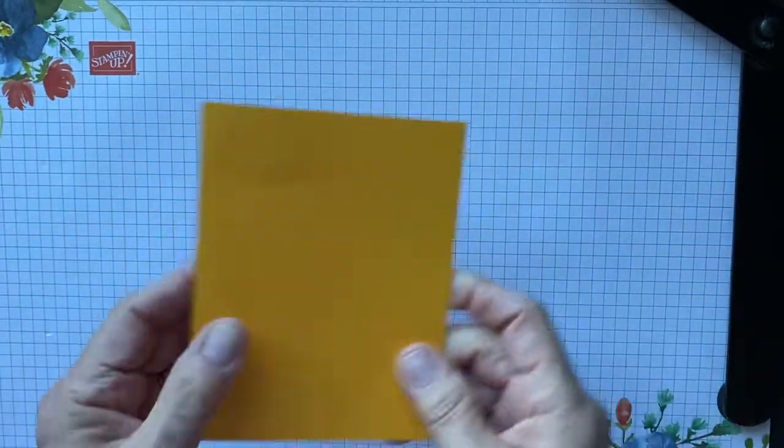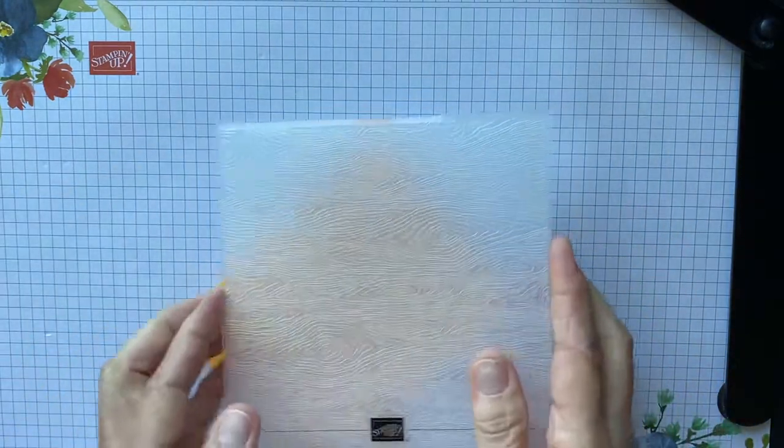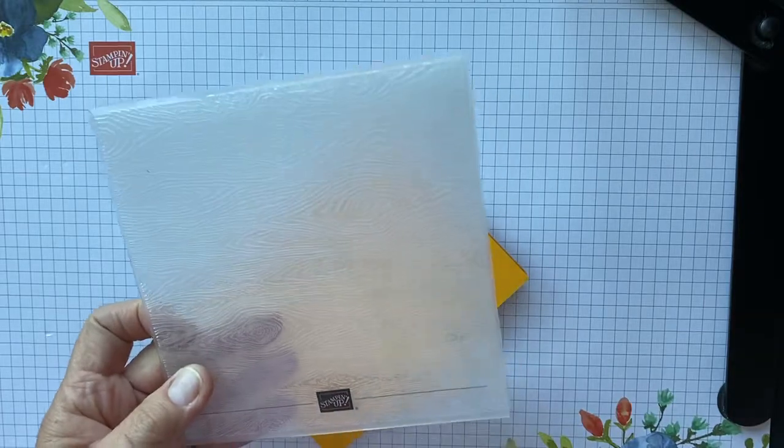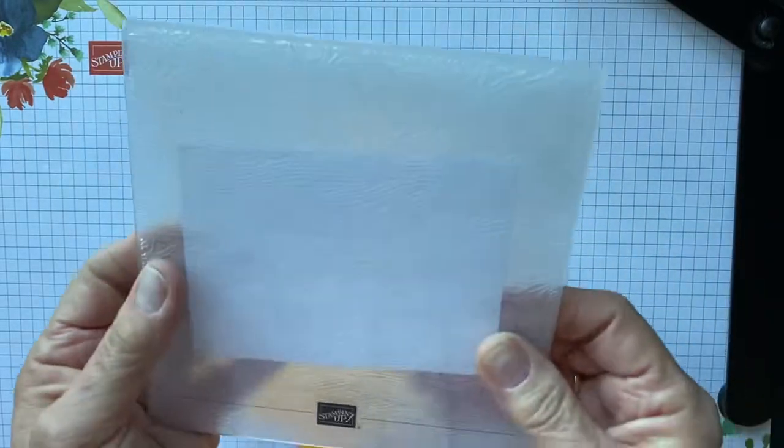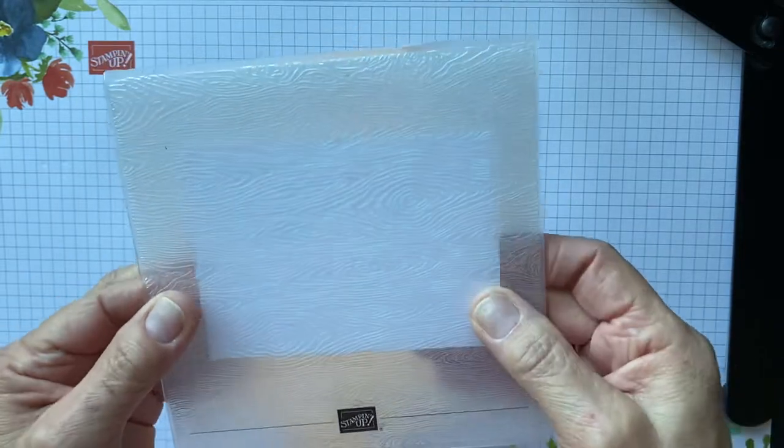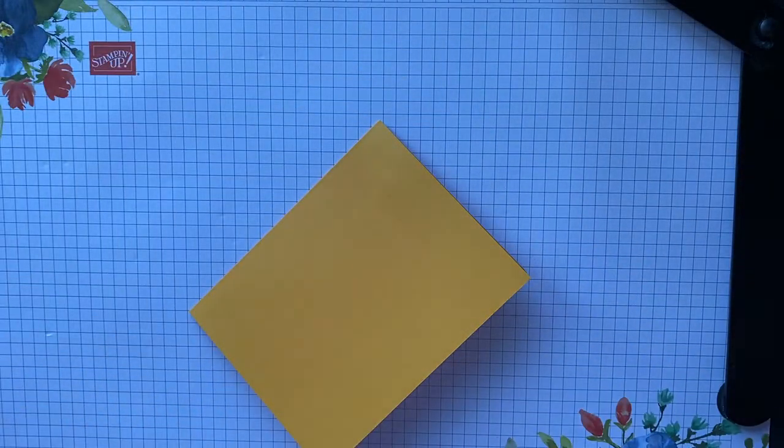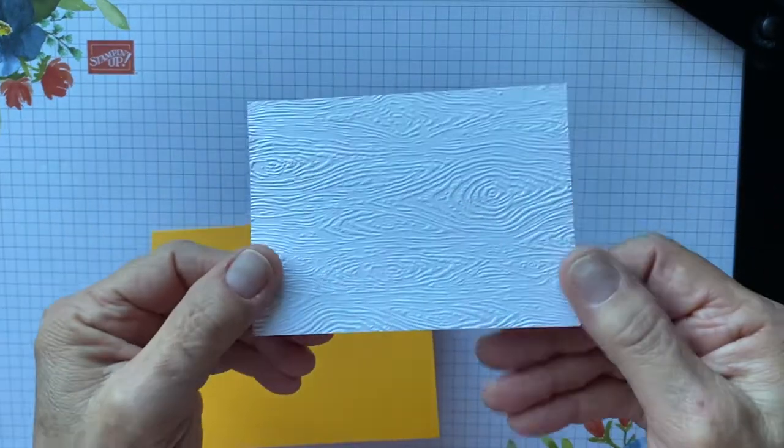And then we're going to layer our cards. So when you take the Timber embossing folder, you're going to take your piece of paper, you're going to just place it in here wherever you want it to be, and then you're going to run it through your embossing machine.